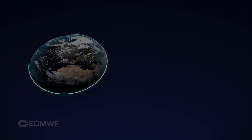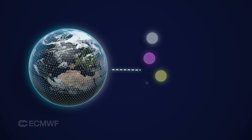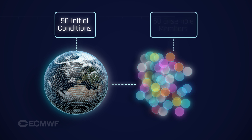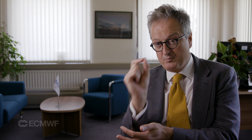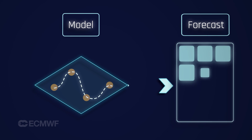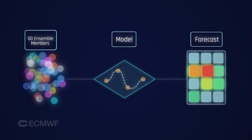Ensemble prediction is about running one model several times. And in particular here at ECMWF, we were trying to change the initial conditions of the forecast. For each point over the globe, instead of having just one value of temperature, we have 50 values of temperature at the initial point — the same for wind, the same for pressure. And this would actually trigger the atmosphere to go in different directions in our forecast, so I can estimate, using all of them, what's going to be the possible range of forecast.